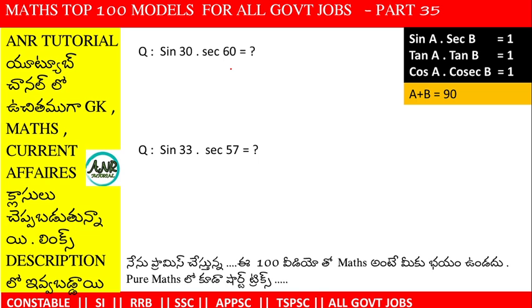We can do sin 30 into secant 60 easily. Sin 30 value is 1 by 2, into secant 60 value — the 2 cancels — so the answer is 1. We can do it simply.